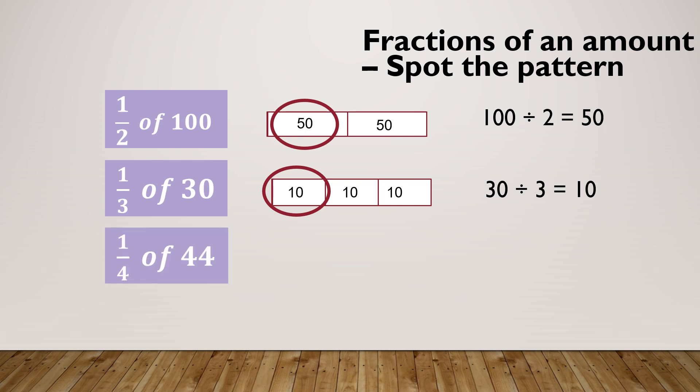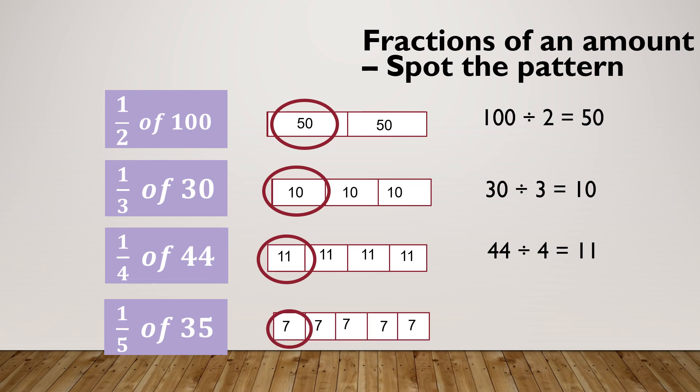A quarter of 44. So I'm doing 44 and I'm splitting it into four equal bits and I've got one of those. So I'm doing 44 divided by four equals 11. And one more example, a fifth of 35. I'm splitting 35 into five equal bits and I've got one of those. So I'm doing 35 divided by five equals seven. And don't forget, your denominator or your bottom number is how many equal parts you've broken something into.